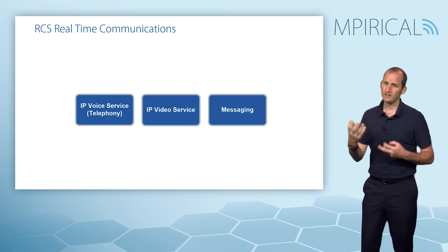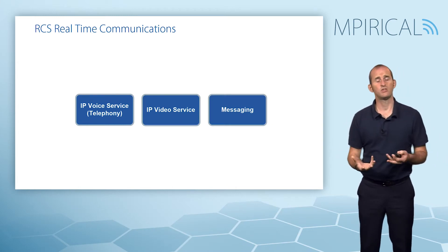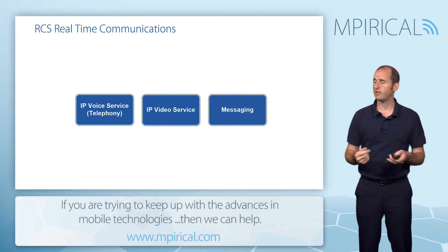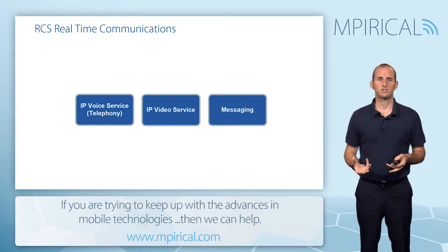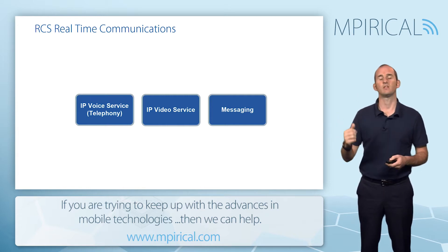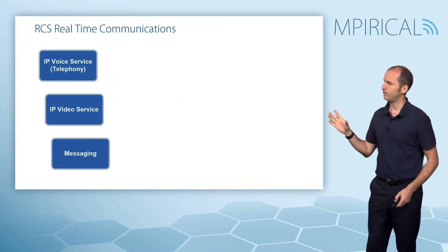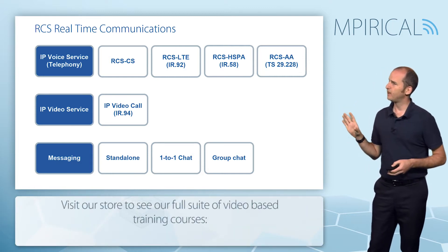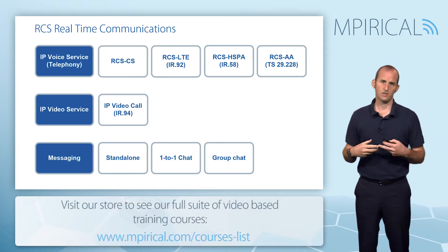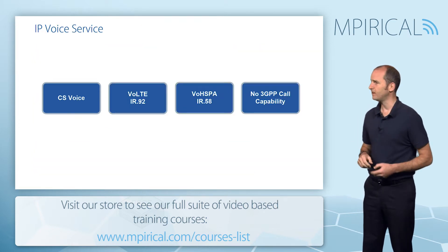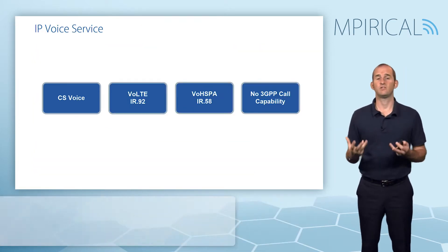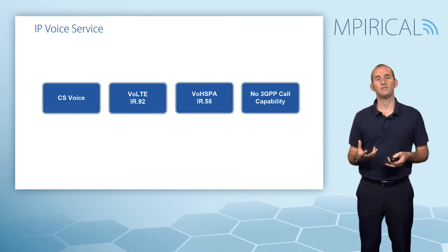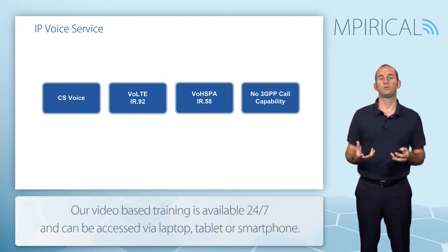Generally speaking, the real-time services we discuss relative to RCS are a telephony service, a voice service, a video service, and a messaging service. But under those high-level category names there are actually several different instances of those services. We'll tackle each one in turn, beginning with the details of the IP voice service. The determining factor for each flavor is essentially what kind of access network we are using.